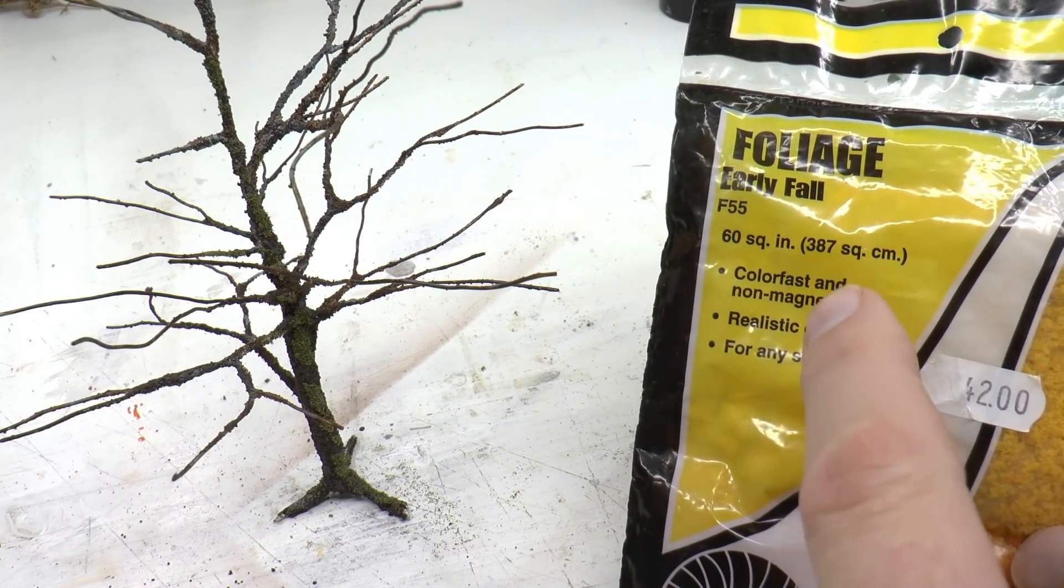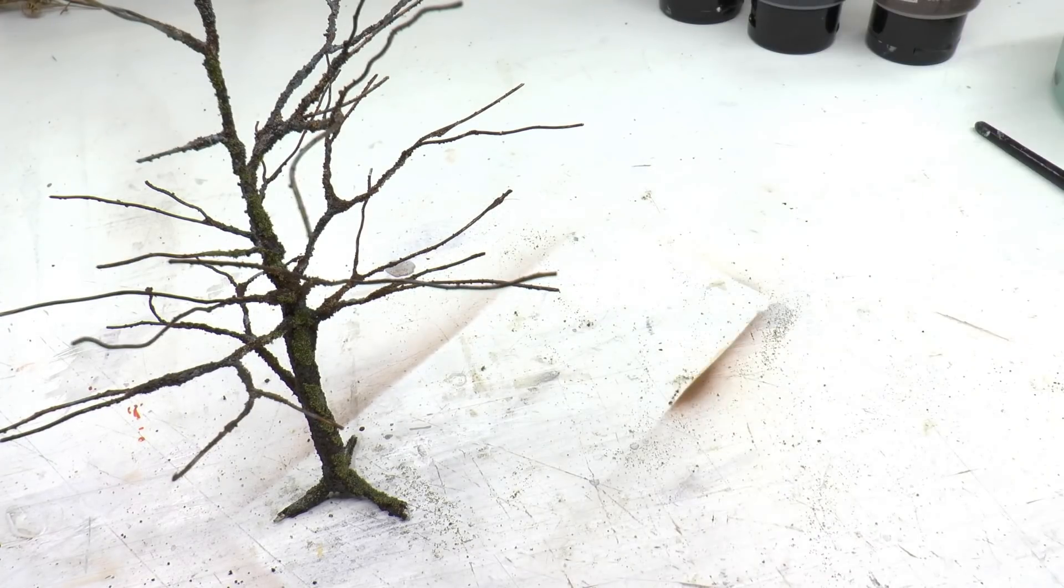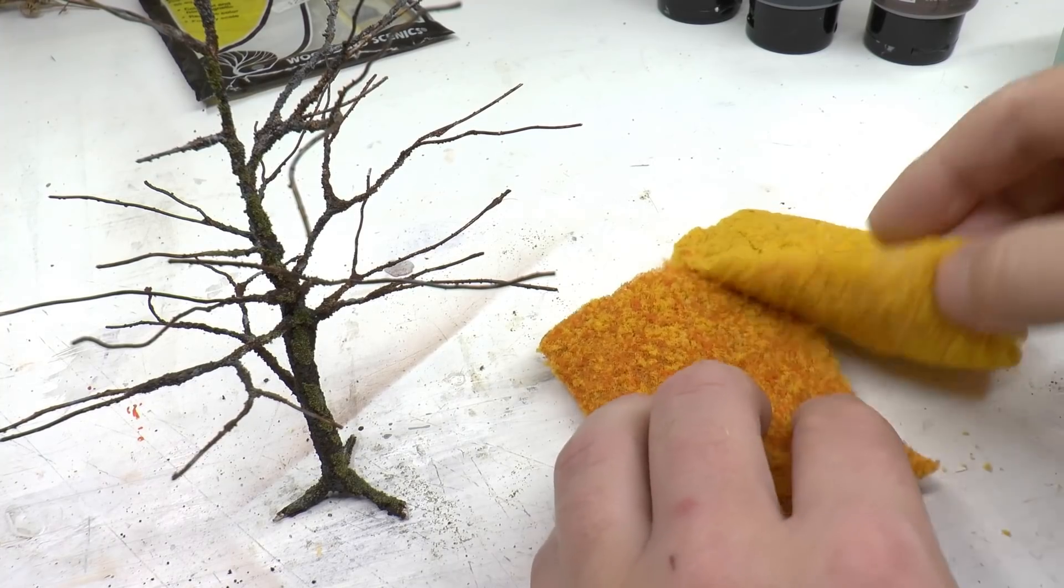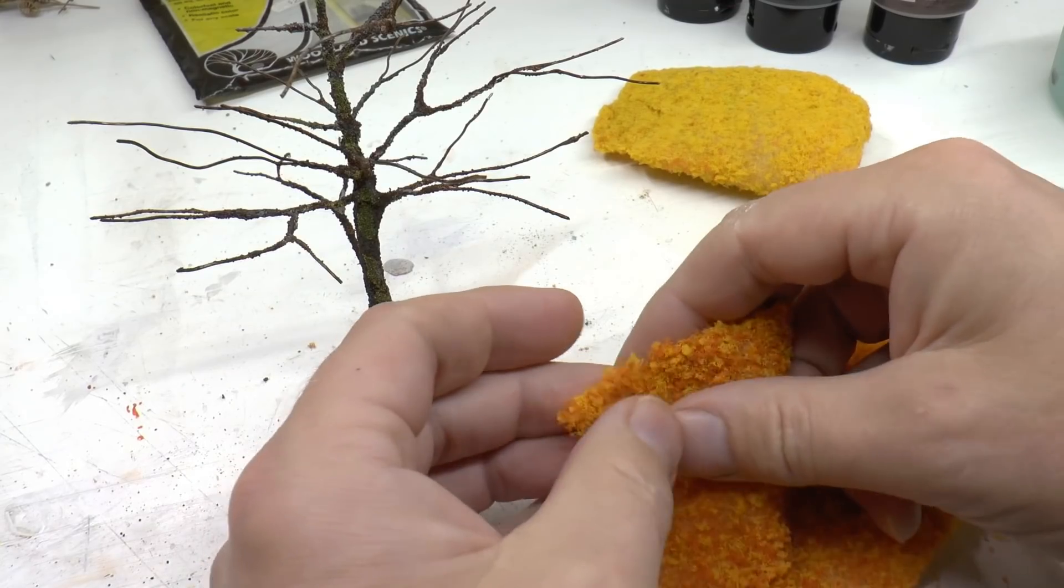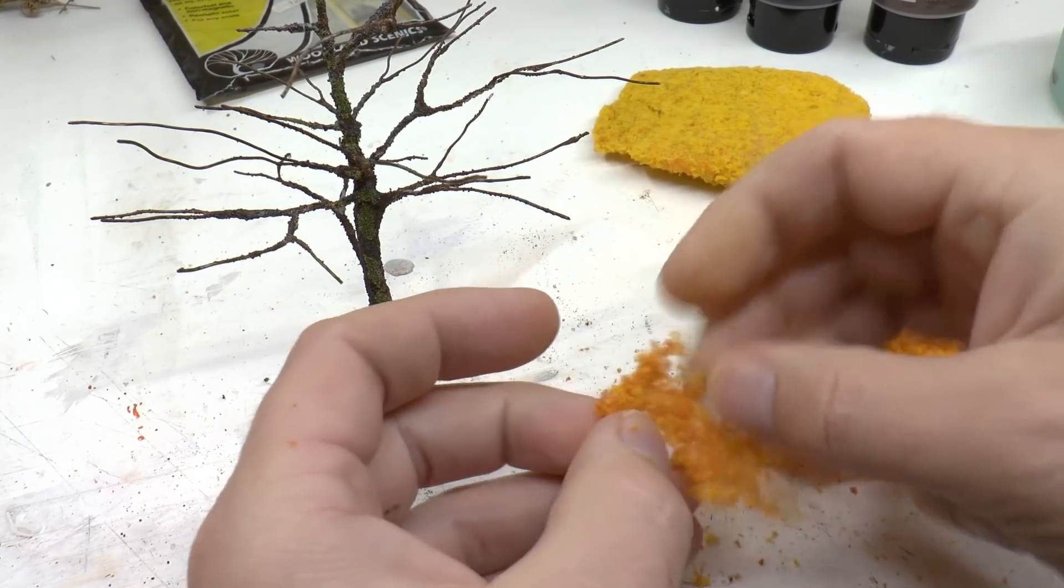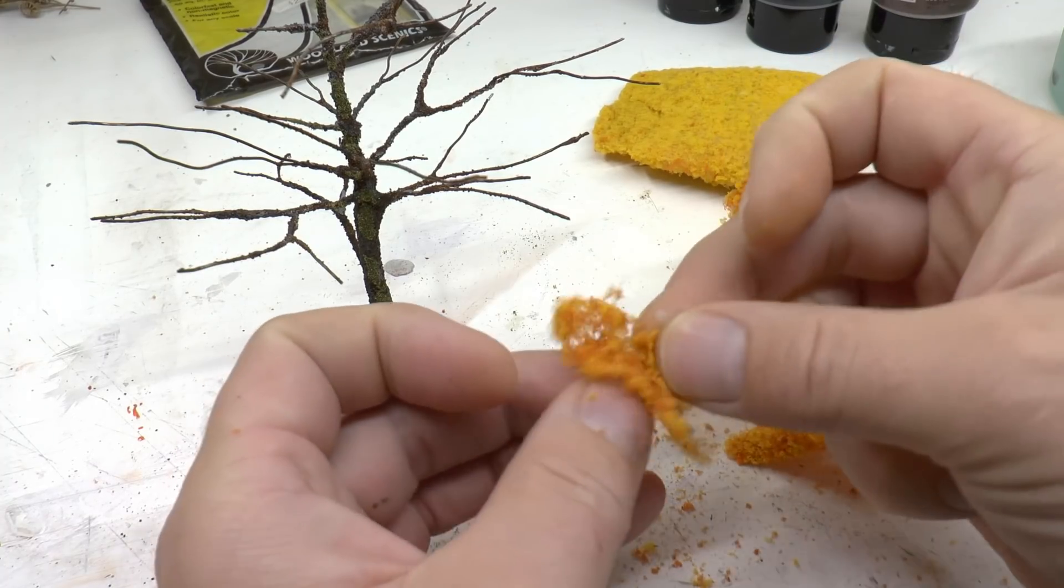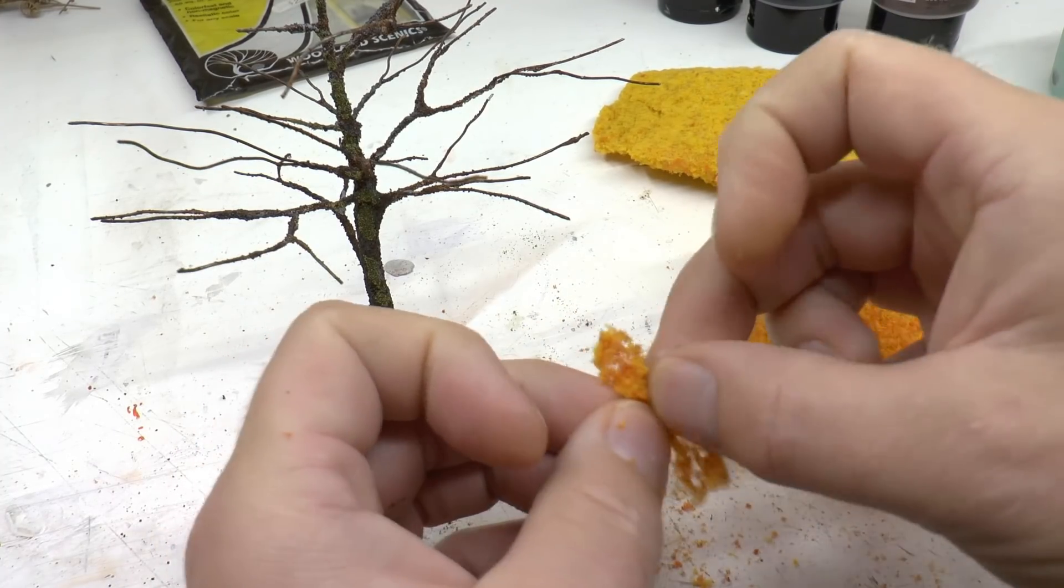I'm taking a shortcut even here. This is a ready-made foliage brush number F55 from Woodland Scenics. It comes in two shades of autumn color. It's a more orange color and a more yellow and I'm going for that orange color at the lower branches and the more yellow at the top.